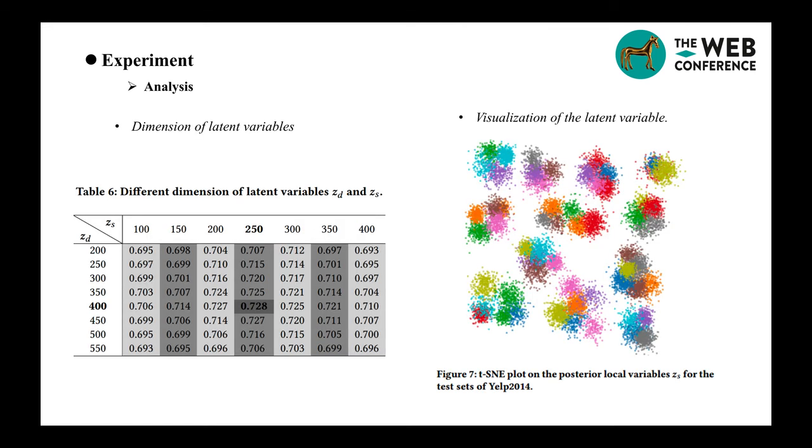We also study the dimension of two latent variables. Overall, we find that either too large or too small size of latent variables equally hurts the performance, so we take 400 dimension of zD and 250 dimension of zS. Also, we perform the visualization of the latent variable. We note that the local-level representations are more diversified for capturing the fine-grained targets and opinion clues.